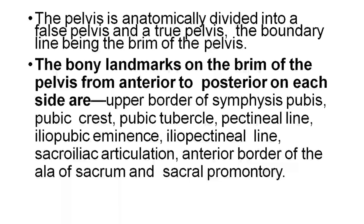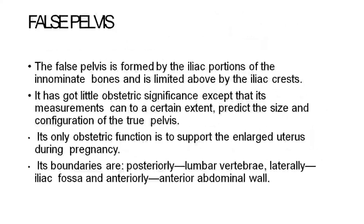The bony landmarks of the brim of the pelvis from anterior to posterior on each side are: upper border of symphysis pubis, pubic crest, pubic tubercle, pectineal line, iliopectineal or iliopubic eminence, iliopectineal line, sacroiliac articulation, anterior border of the ala of sacrum, and sacral promontory.